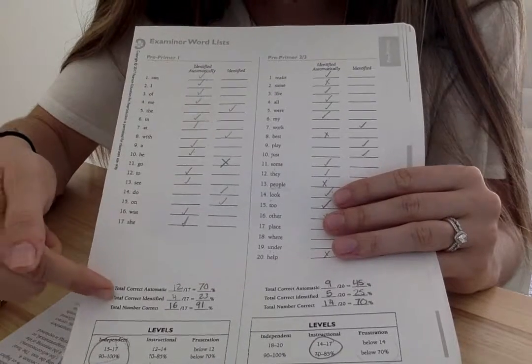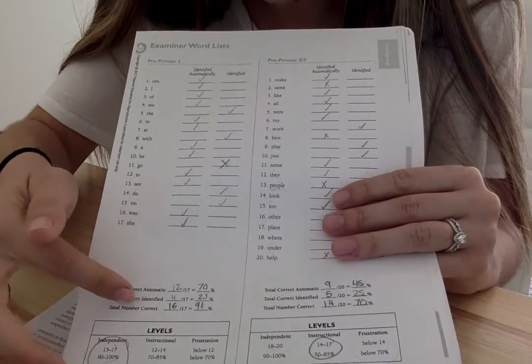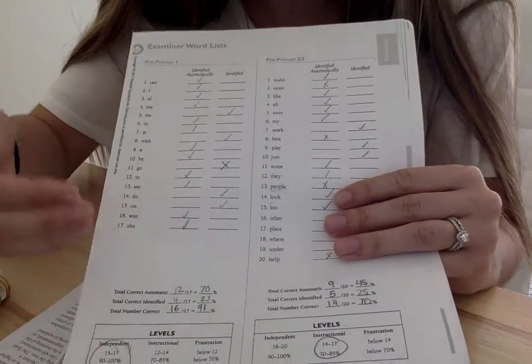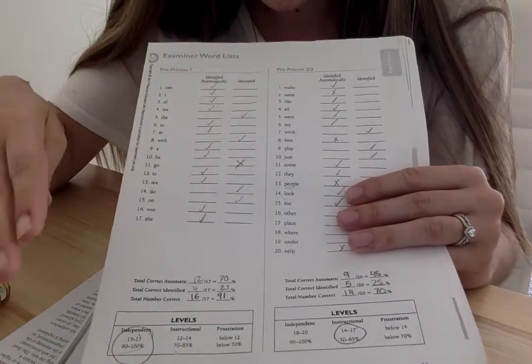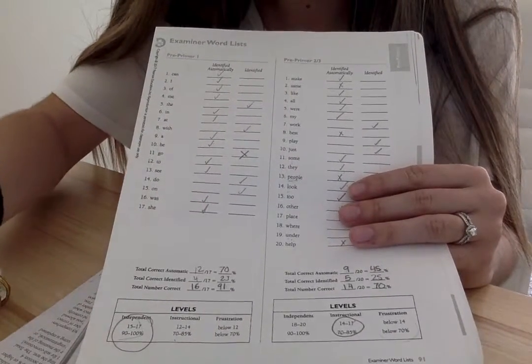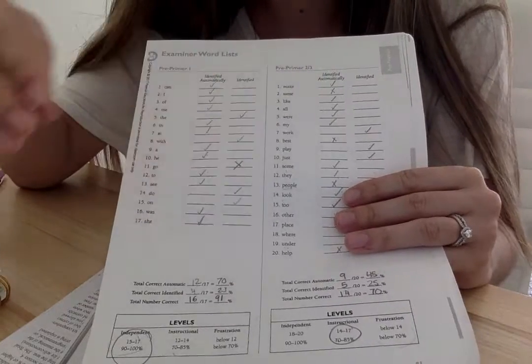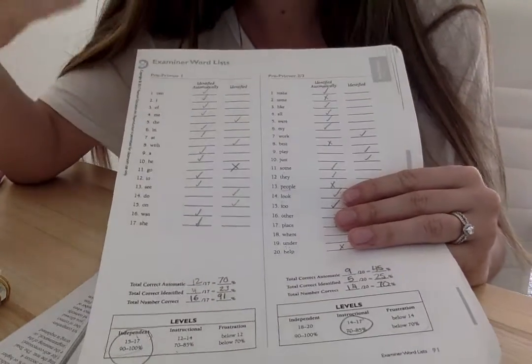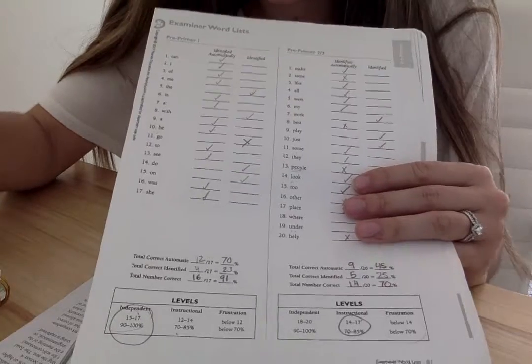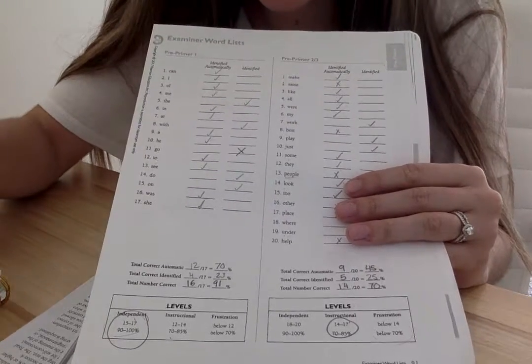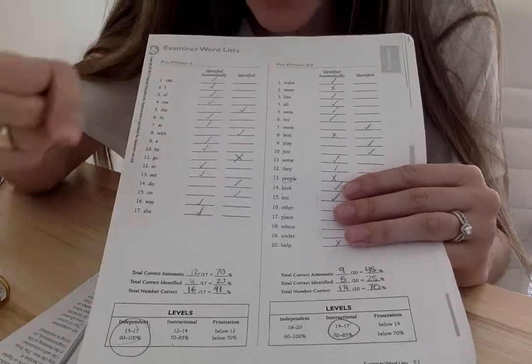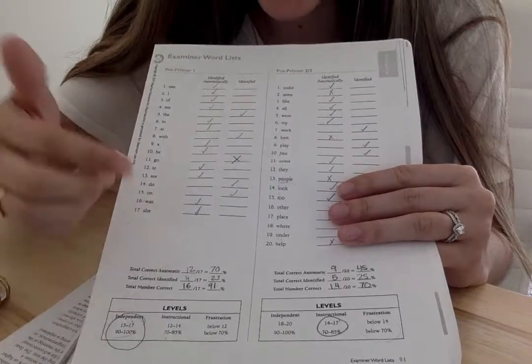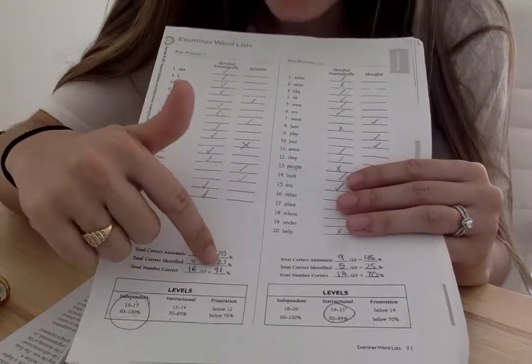So what I did down here at the bottom here is I first calculated how many words that he got automatically, which was seven... which is 12 out of 17, which is good. It equaled to 70%. And then I took the amount of how many he identified, which is four out of 17, which is 25%. And then the total, because even though we have two sections where we know what comes automatic and then what he can identify, we just separate those so that we're able to see that like, okay, maybe with the word 'do,' we could still put that in his high frequency words that he's learning or put that in his sight words so that he's really able to recognize it immediately.